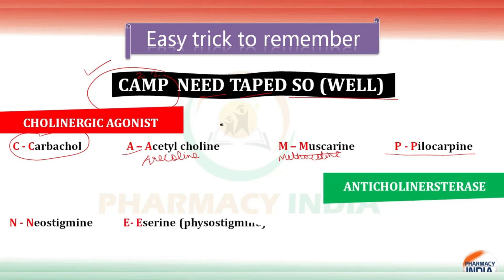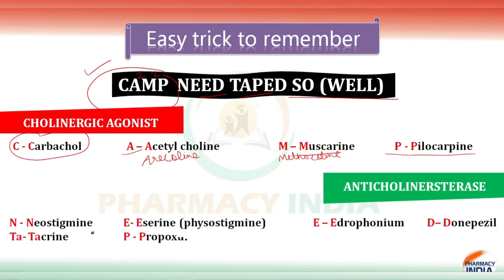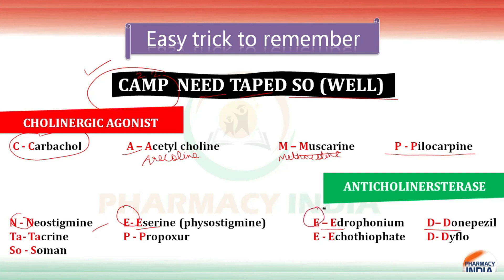NEED stands for: N for neostigmine, first E for sarin (edrophonium), second E for edrophonium (atropine), and D for donepezil. Then TAPED: T for tacrine, A for arecoline, P for propoxur, E for ecothiophate, and D for DFP. SO stands for soman. This covers the full mnemonic CAMP NEED TAPED SO.